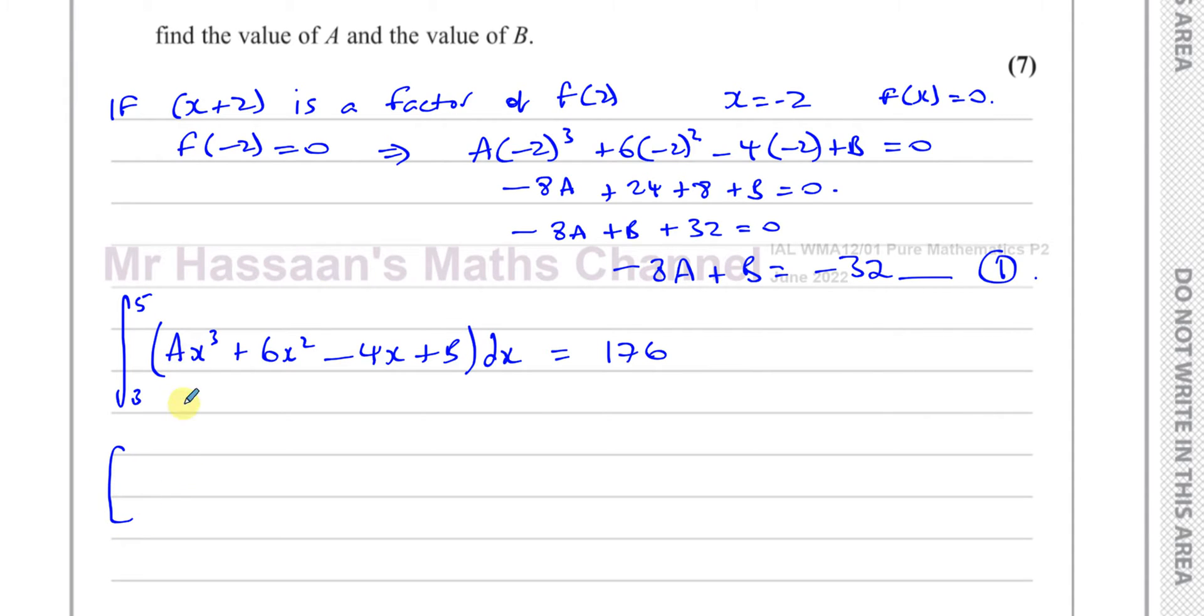We've got the integral between the limits of 3 and 5 of ax³ plus 6x² minus 4x plus b. All of that integrated with respect to x is going to give us 176. So let's just integrate this now. When you integrate this, a is a constant, so basically you increase the power by 1, so it's ax⁴ and divide by the new power.